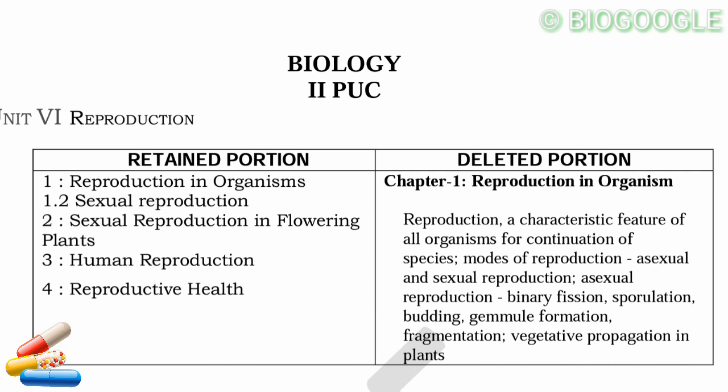The next part covers reproduction: characteristics of all organisms, continuation of species, modes of reproduction — asexual and sexual. Asexual reproduction includes binary fission, sporulation, budding, zoospore formation, fragmentation, and vegetative propagation in plants. The asexual reproduction section is complete and deleted.